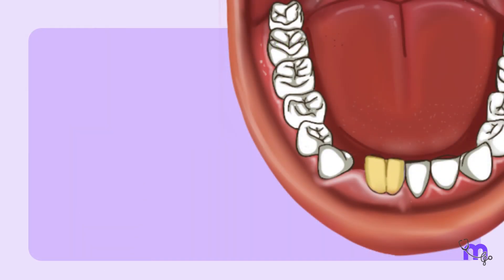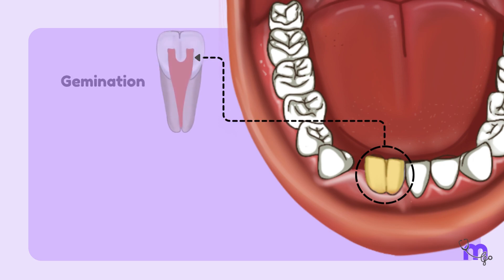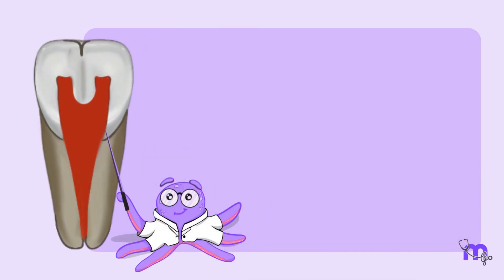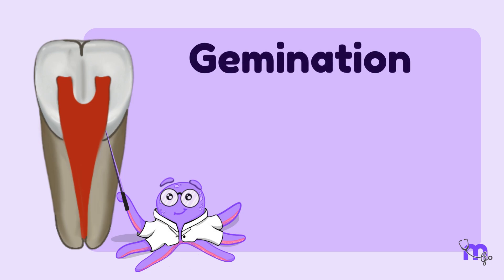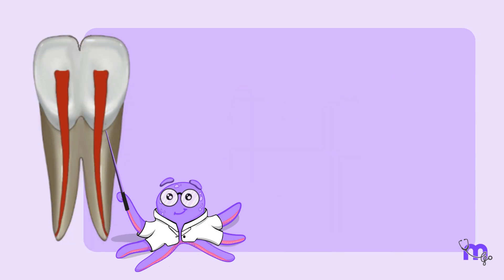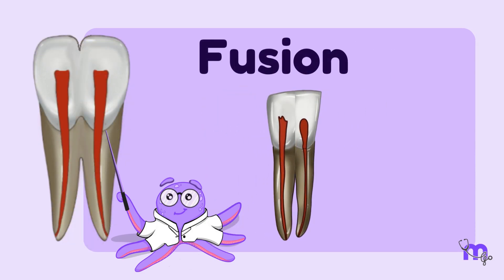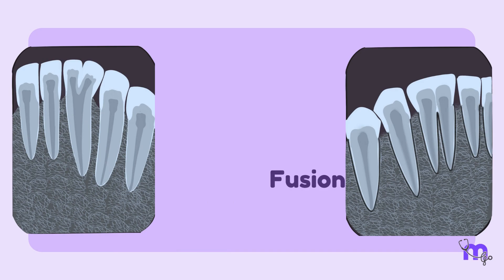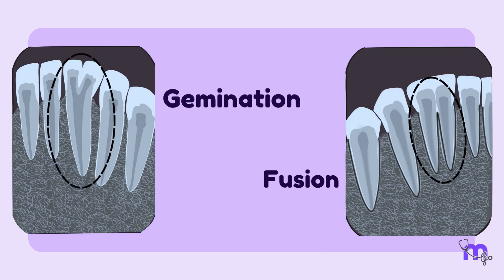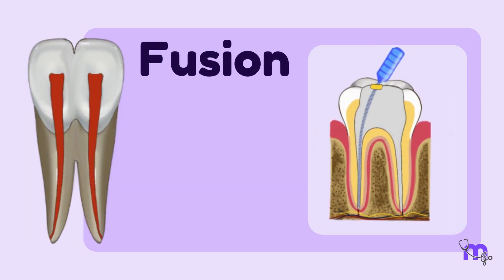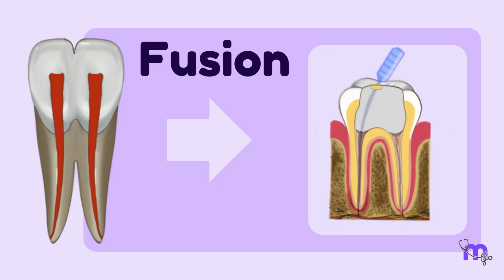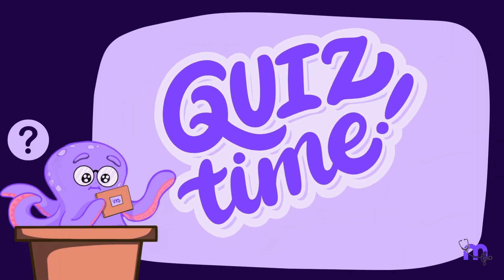Now let's say a patient with a carious mandibular incisor presents with gemination or fusion. How would this affect the axis cavity preparation? By definition, gemination is an attempt of a single tooth bud to divide, and fusion is the union between the enamel and dentin of two or more separate teeth. These can be differentiated radiographically, as fusion would have more than one root canal, while gemination would have a very large single canal. In cases of fused teeth, the root canal treatment needs to be carried out like in a multi-rooted tooth, with complete pulp extirpation and chemo-mechanical preparation.